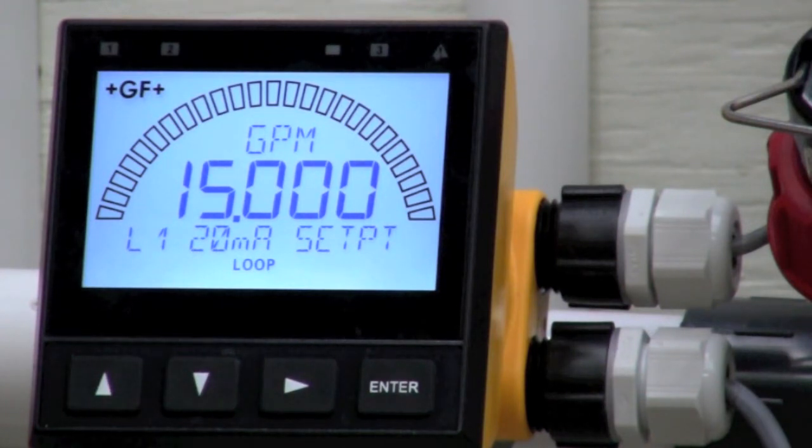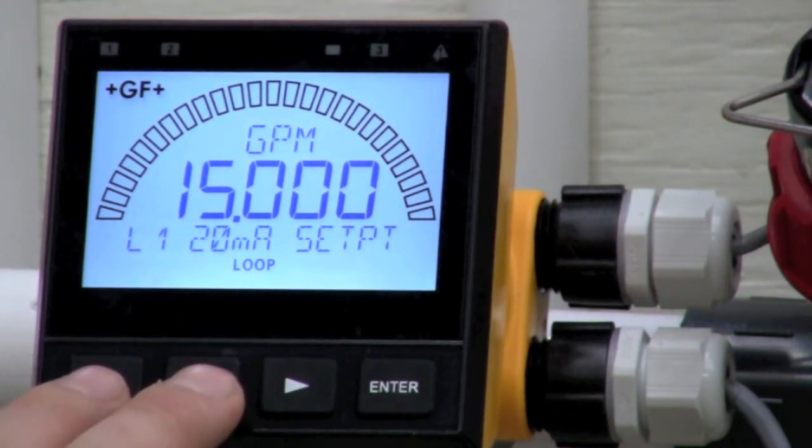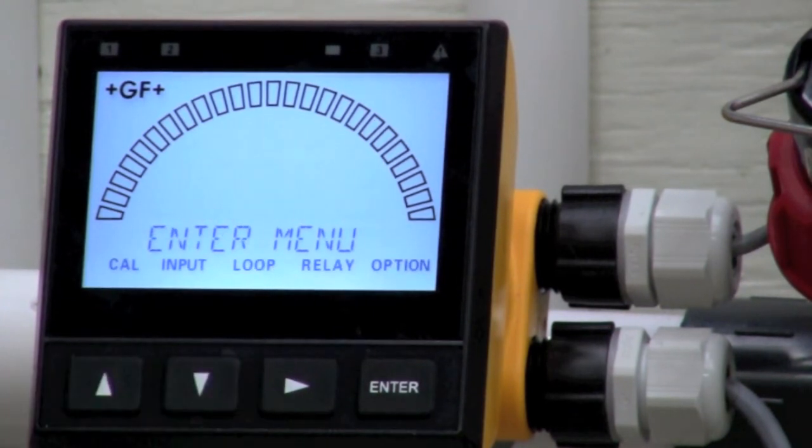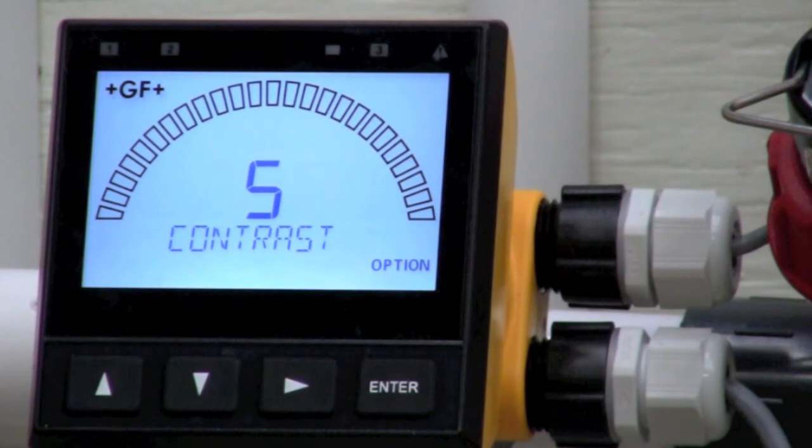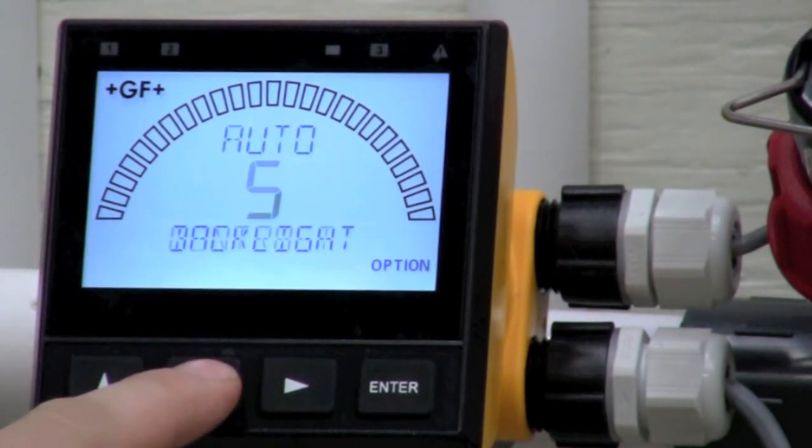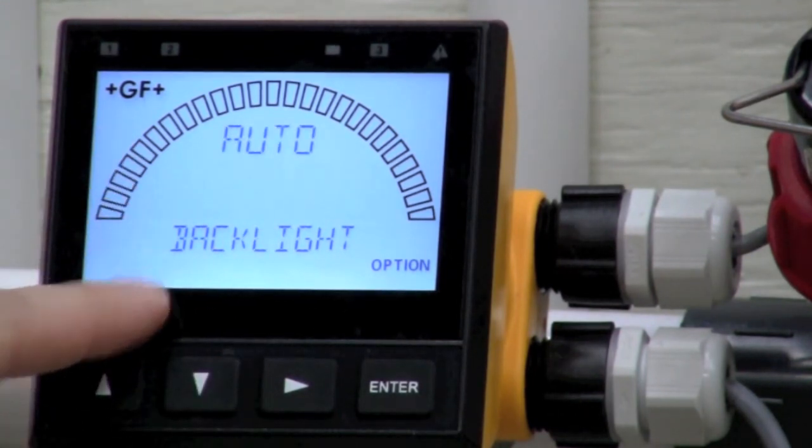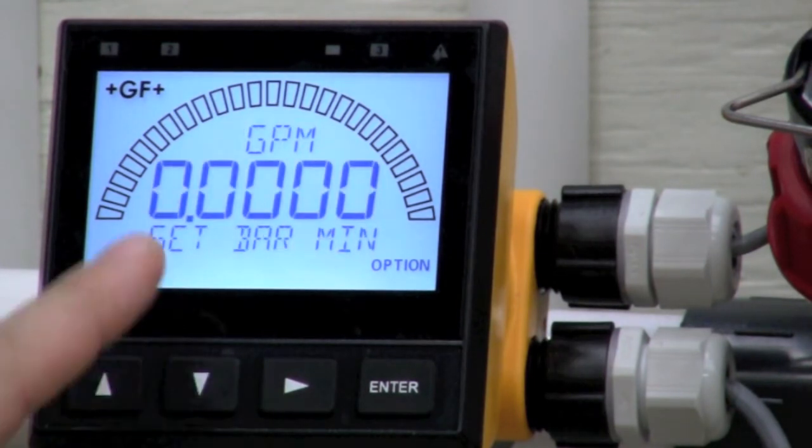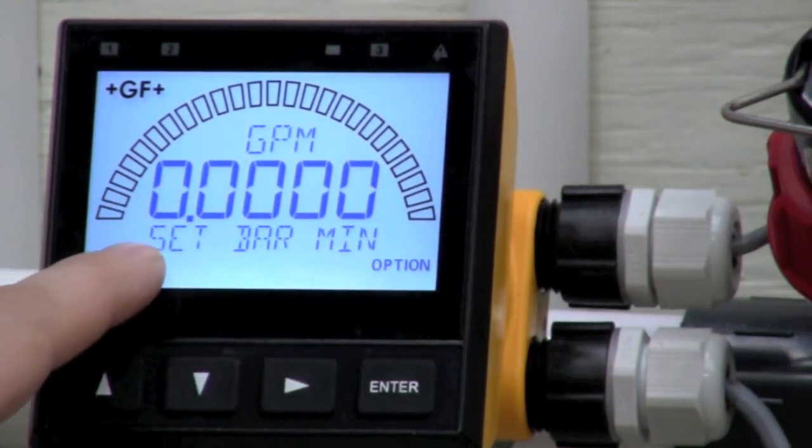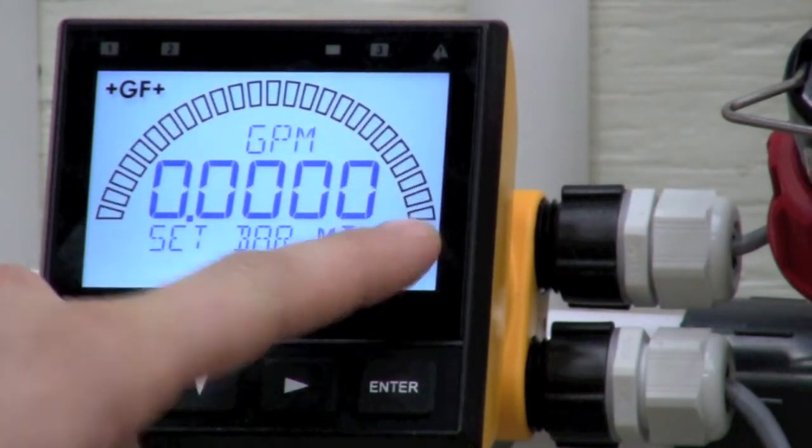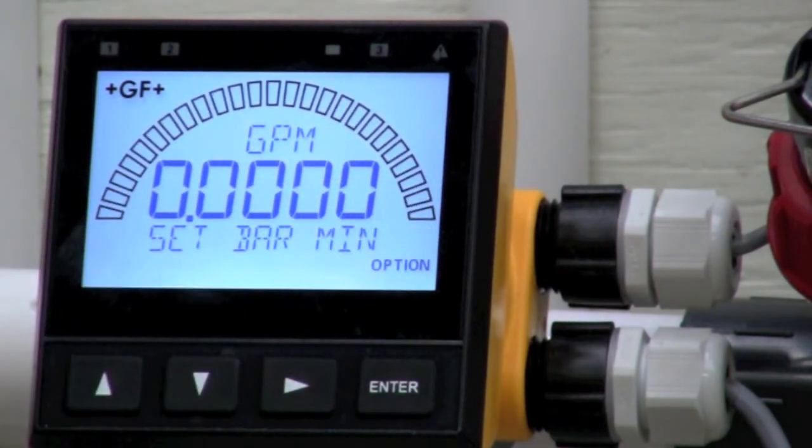There's a couple other niceties that you can go into that a lot of people like to set. I'm going to show you those real quick. I'm going to back up both buttons. If I go over to options, hit enter. I can adjust the contrast here if I so desire. Backlight, I'm going to leave that on auto. This is for the bar graph. You see this bar graph here. This operates independently of the 4 to 20 milliamp output. What you put here does not affect it and vice versa.